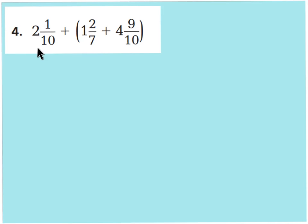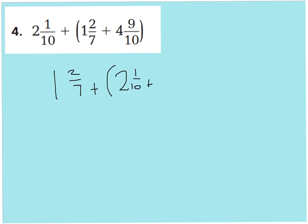Let's look at question number 4: 2 and 1 tenth plus 1 and 2 sevenths plus 4 and 9 tenths. With the associative property, it doesn't matter how you group your numbers in an addition sentence. So I'll regroup and put inside the parentheses the numbers that have the same denominator of 10. This is also like the commutative property — I'm switching the addends around. So I'll rewrite this as 1 and 2 sevenths plus parentheses 2 and 1 tenth plus 4 and 9 tenths, grouping the fractions with tenths as the denominator.